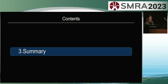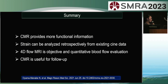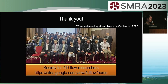In summary, CMR can provide more functional information. Strain can be analyzed retrospectively from existing cine data. 4D flow MRI enables objective and quantitative blood flow evaluation. We hope to apply these techniques more broadly in clinical practice. Thank you for your attention.